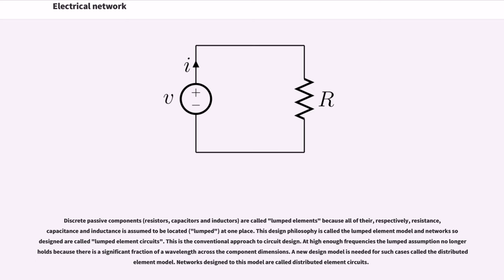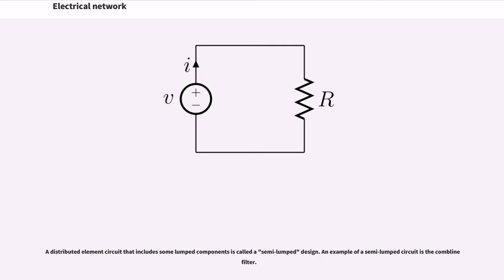This is the conventional approach to circuit design. At high enough frequencies the lumped assumption no longer holds because there is a significant fraction of a wavelength across the component dimensions. A new design model is needed for such cases called the distributed element model. Networks designed to this model are called distributed element circuits. A distributed element circuit that includes some lumped components is called a semi-lumped design. An example of a semi-lumped circuit is the comb line filter.